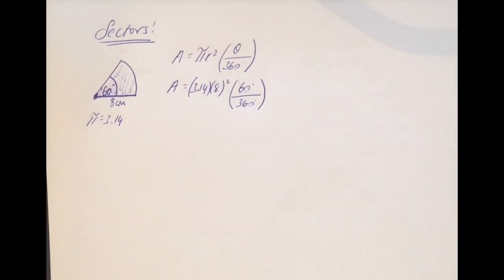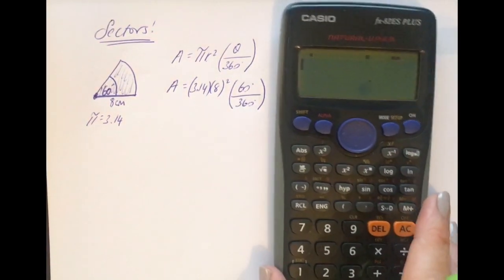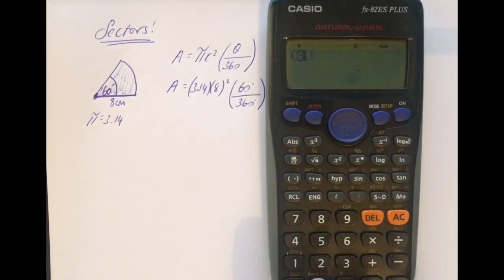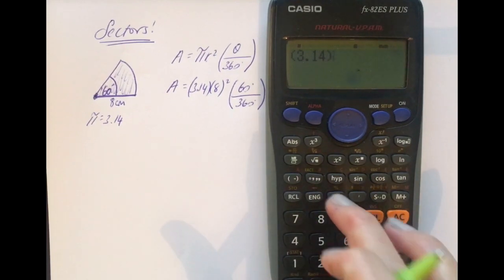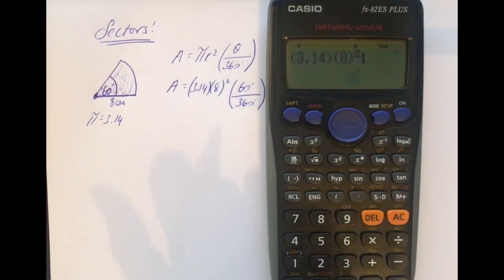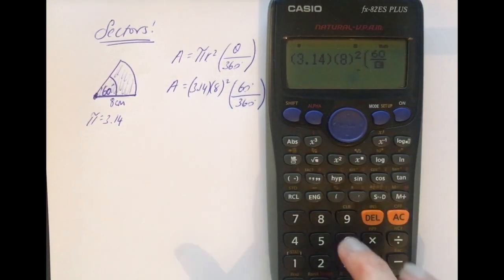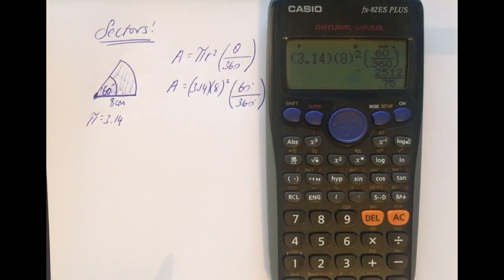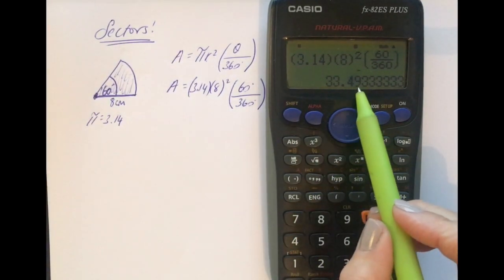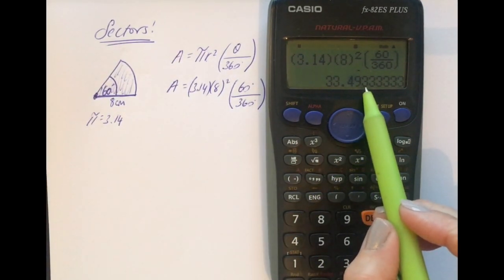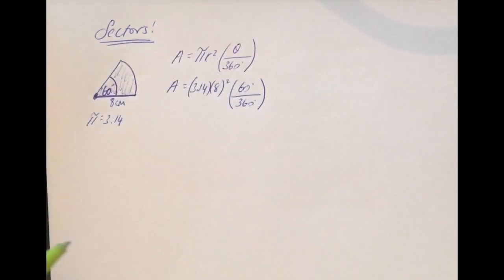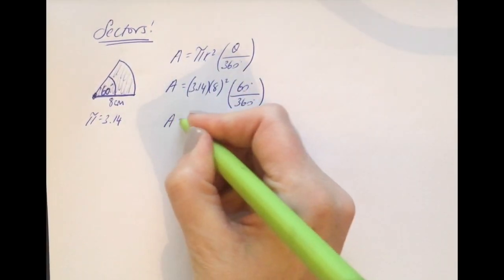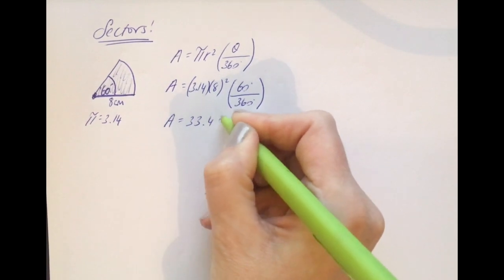Now get your calculator and we're going to type this in. So bracket 3.14 close the bracket, open the bracket again, 8 close the bracket squared, open the bracket again, and put your fraction 60 on the top and 360 on the bottom, because we want the fraction of the circle that we need. And the answer is, let's get it in decimal form, 33.49. Since 3 comes after, the 9 will not get bumped up, so 33.49 is the area of that sector.